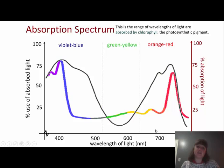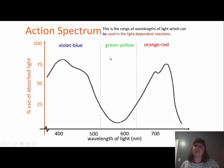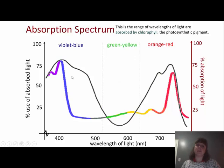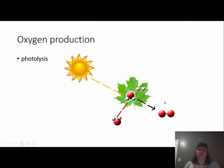The absorption spectrum is the range of wavelengths of light that are absorbed by chlorophyll, the photosynthetic pigment. On the combined graph, the black line shows how absorbed light is used (action spectrum) and the colored line shows how much is absorbed (absorption spectrum). You can see that where we use the most absorbed light is mirrored by the percent that is absorbed.